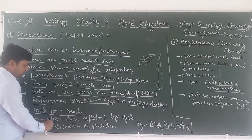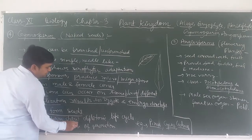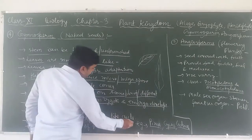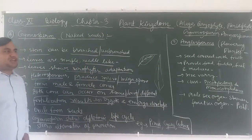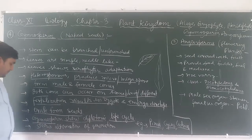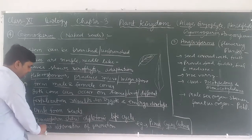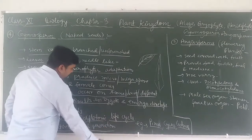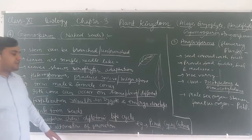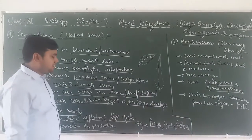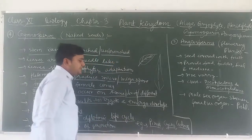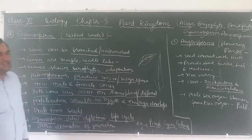Gymnosperms show a diplontic life cycle, also called the diplontic life cycle pattern. They also show alternation of generation. Examples of gymnosperms include Pinus, Cycas, and Cedrus.